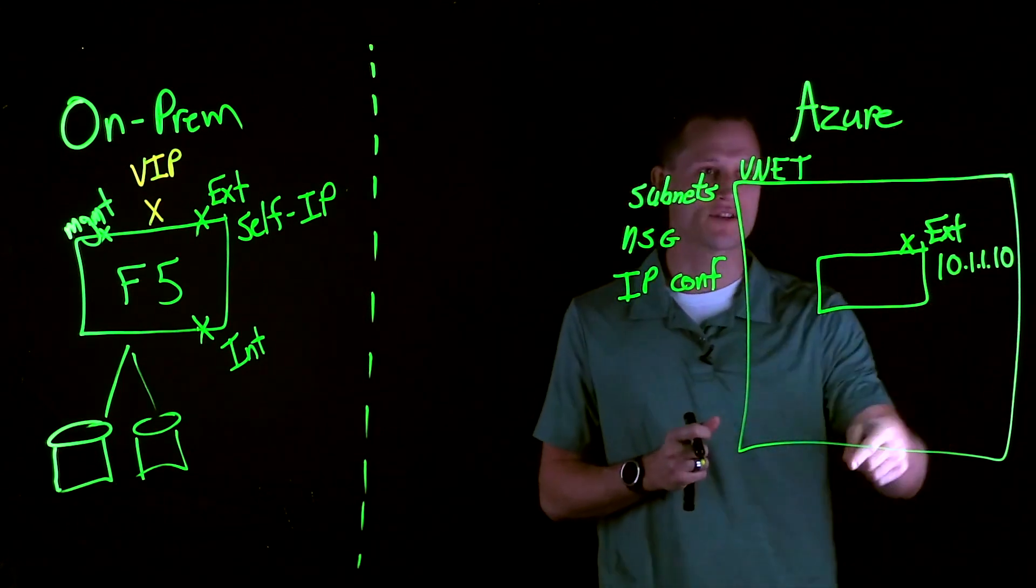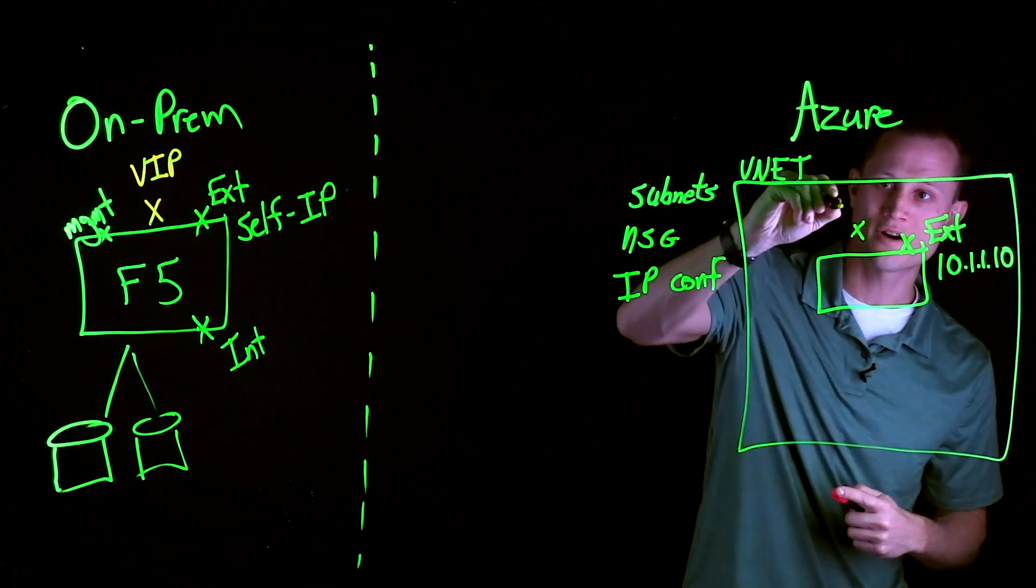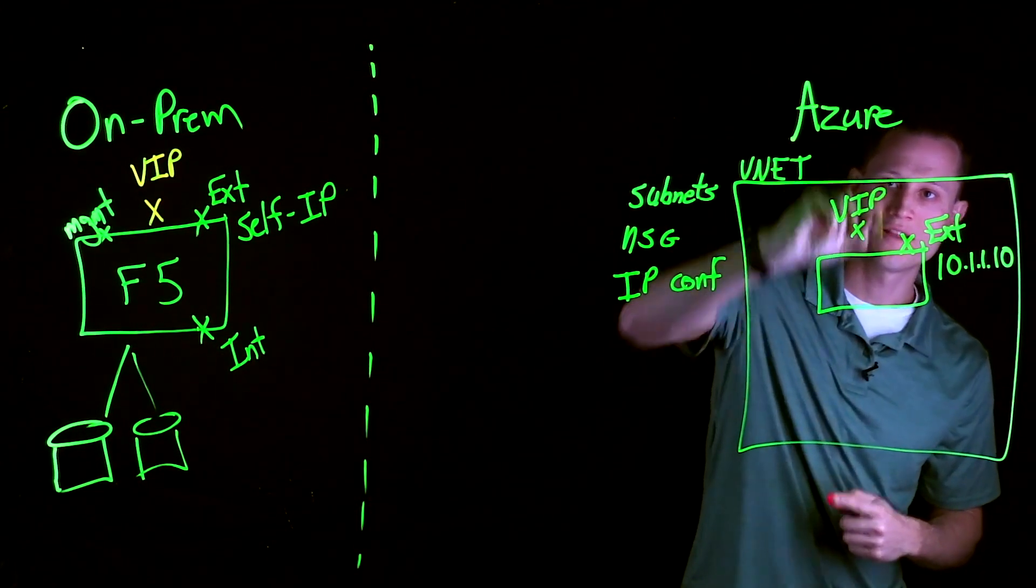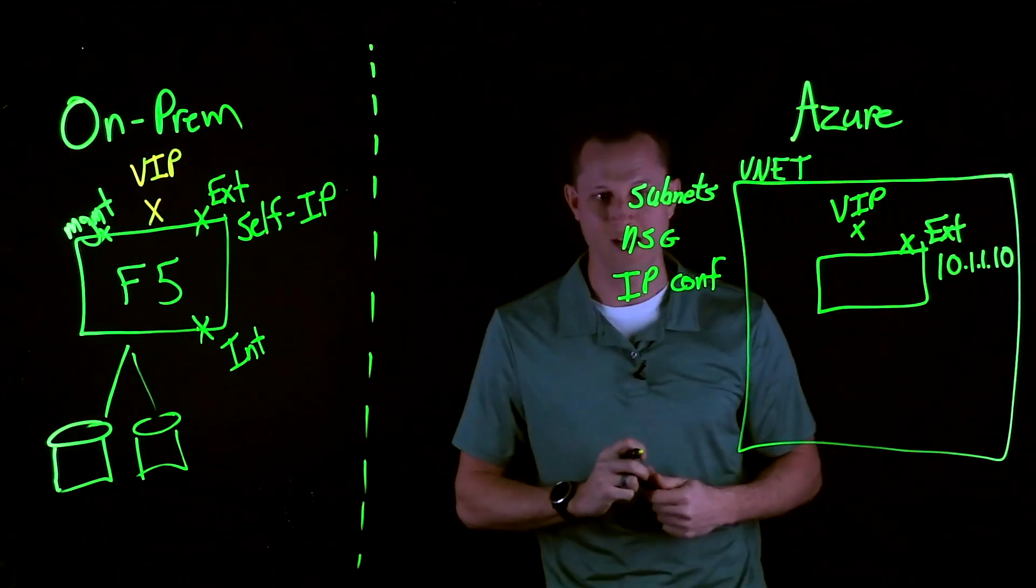These secondary IPs can be multiples. This is also going to apply to your, say you have a VIP front door for your F5. This will also be a secondary IP that somehow needs to map into the Azure cloud.